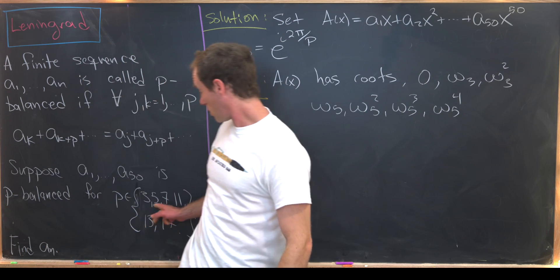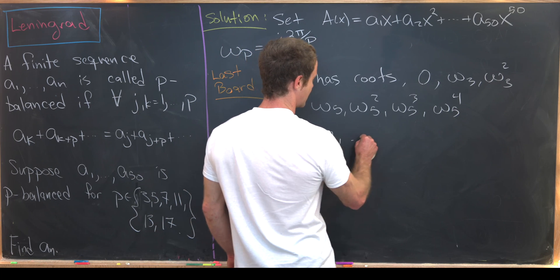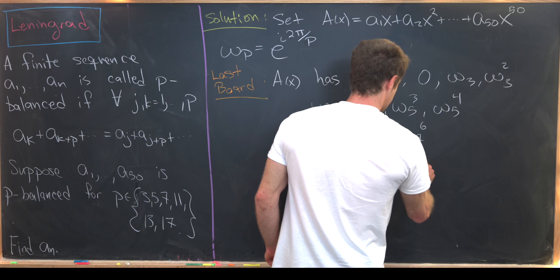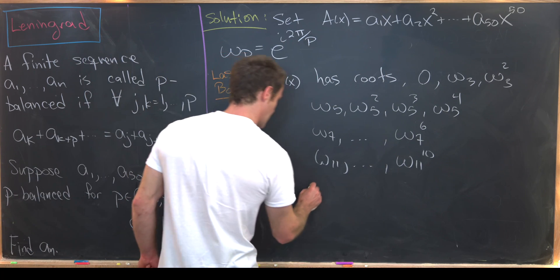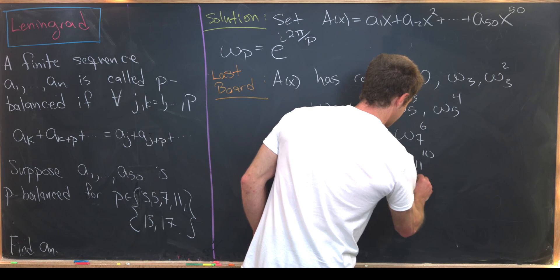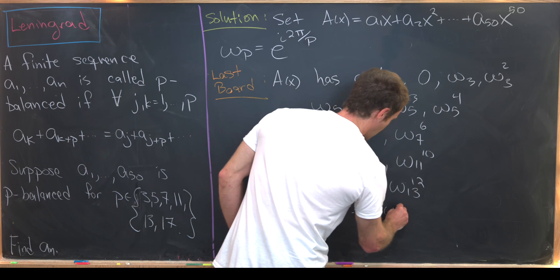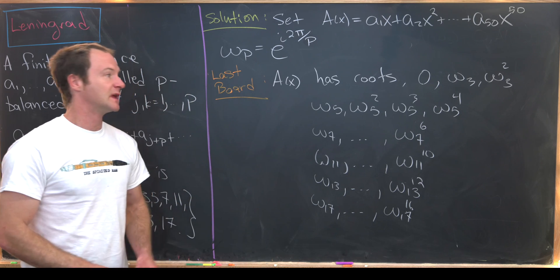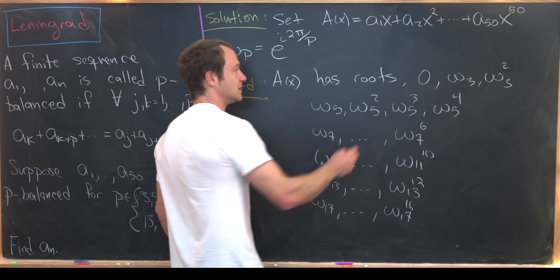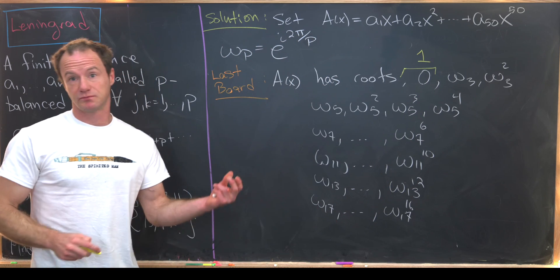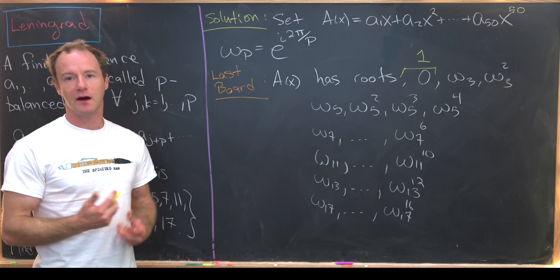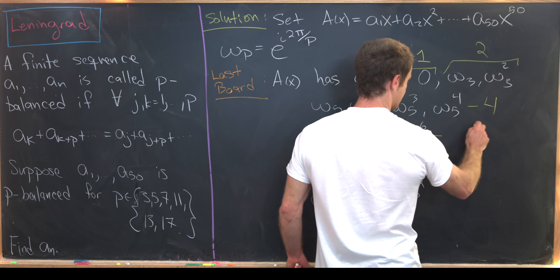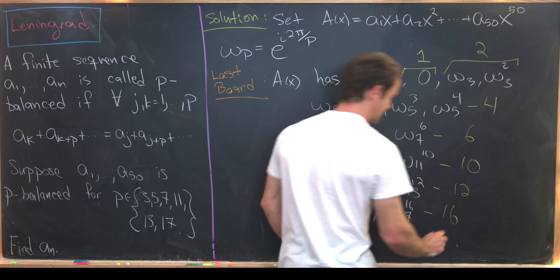Now we can play this game for all of the primes on this list. So we've got omega_7 all the way up to omega_7 to the sixth. We've got omega_11 all the way up to omega_11 to the 10. We've got omega_13 all the way up to omega_13 to the 12. And finally, omega_17 all the way up to omega_17 to the 16. So let's see what we can do from there.